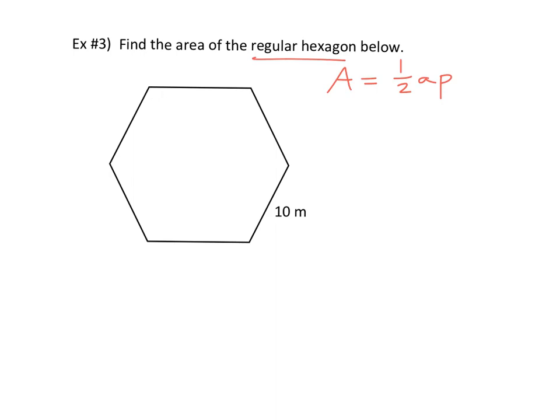A times P. This is a regular hexagon. So that right there should say one half AP. Do you know A or P right now? We don't know either one. But which one can you find fairly simply? P. If this is 10 and there are six sides, what's your perimeter?